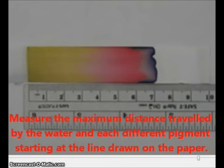To be fair, we should be comparing the distance traveled by the water starting from the same point where the pigment started traveling. So we'll measure all of our distances starting at this point. It looks like the maximum distance traveled by the water reaches about to here and then we can measure the maximum distance traveled by each of the different pigments.